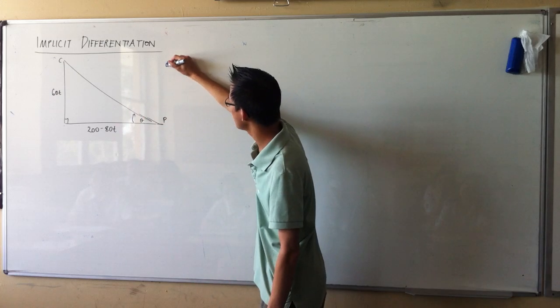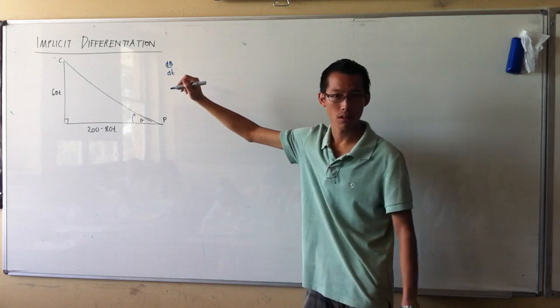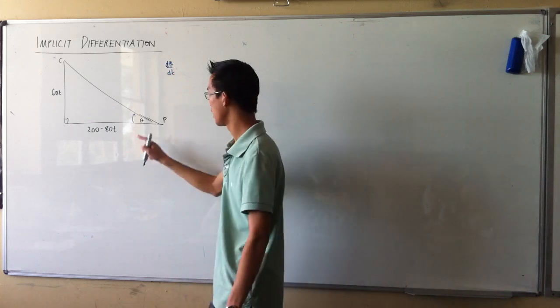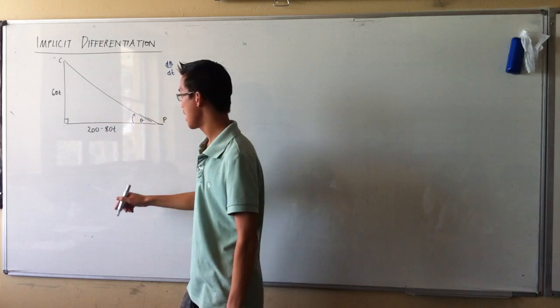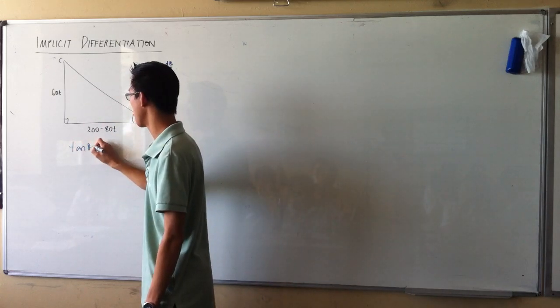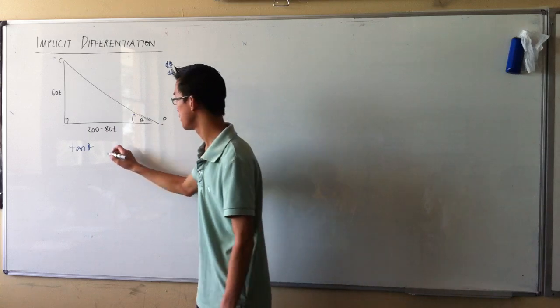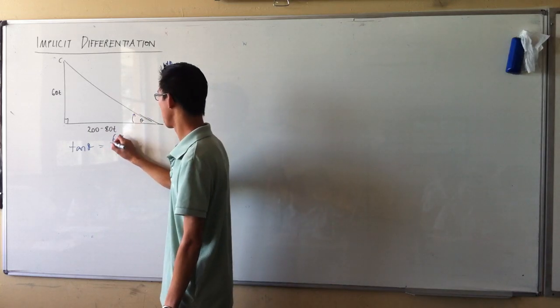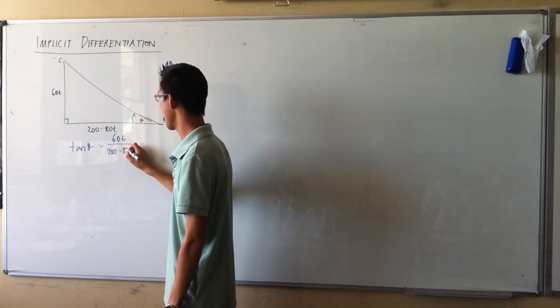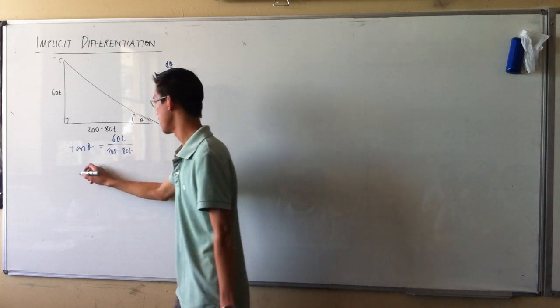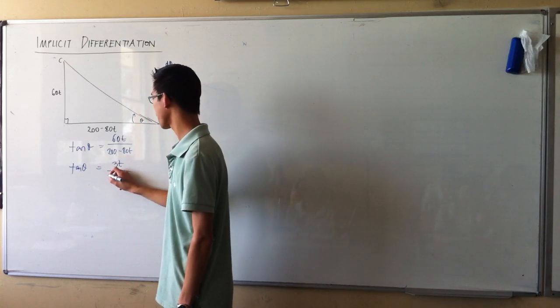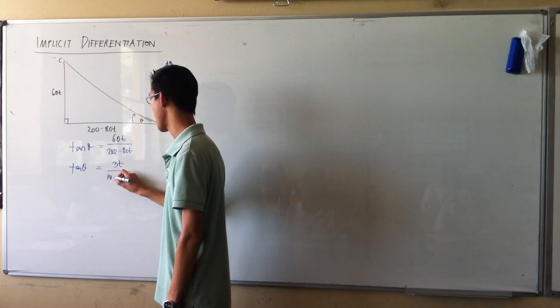So I'm trying to find dθ/dt. We started by saying what's the relationship between this theta and the T's that I've got. And we said the ratio that I'd be interested in is tan, right? And you've got opposite over adjacent, 60T over 200 minus 80T. And then we noticed of course you've got a common factor of 20, so you take that out, and here's where you're at.